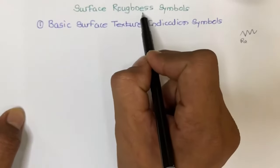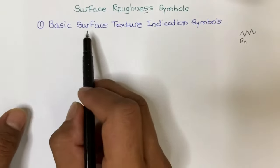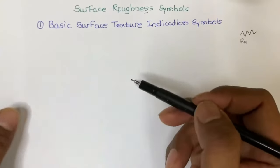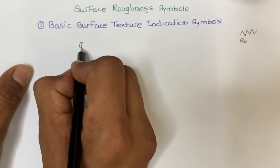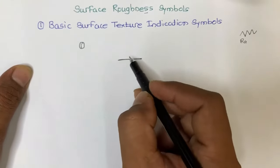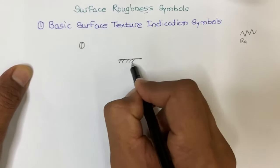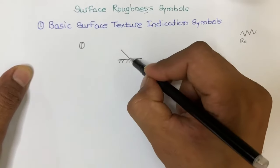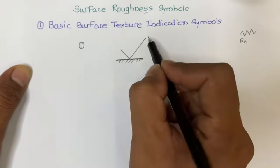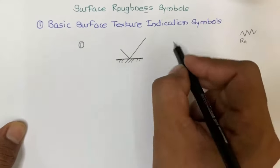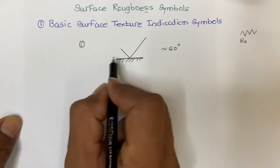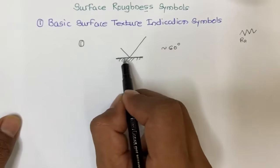Prior to moving toward surface roughness symbols, we will first discuss basic surface texture indication symbols. There are four basic symbols. The first represents a surface whose special characteristics need to be represented. We draw two inclined lines — one short and one long — where the surface is drawn as a thick line and the two inclined lines as thin lines, approximately 60 degrees to the horizontal surface. This is the basic symbol and it is not used directly for representation purposes.